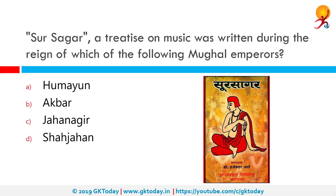Sur Sagar, a treatise on music, was written during the reign of which Mughal Emperor? The correct answer is Akbar. Sur Sagar was written by Sur Das in the 16th century. Sur Das was a blind Hindu devotional poet and singer known for his lyrics written in praise of Krishna, usually written in Brajabhasha, one of the two literary dialects of Hindi.